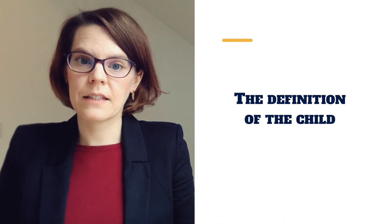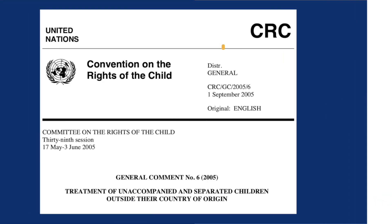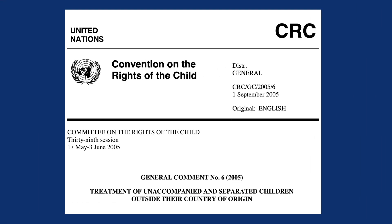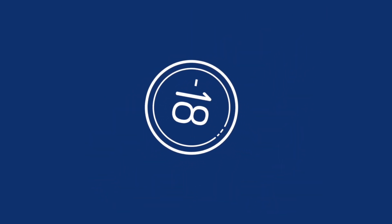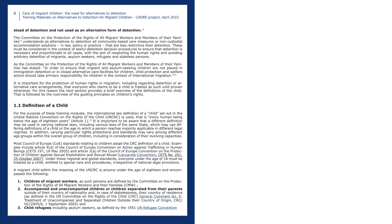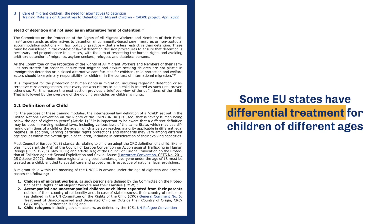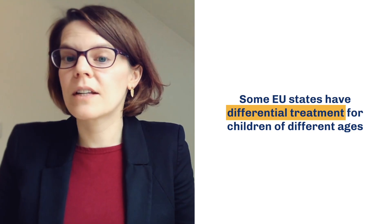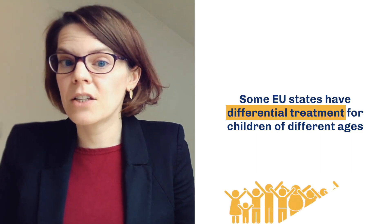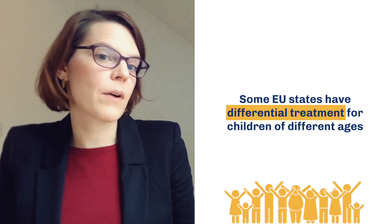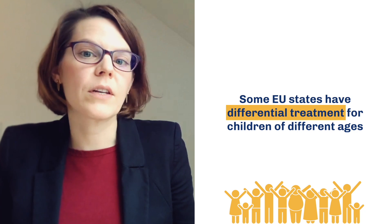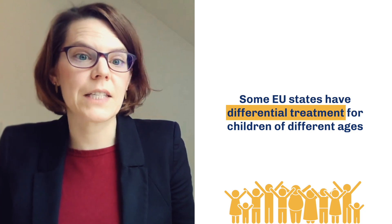First, we look at the definition of the child. The Convention on the Rights of the Child defines a child as any person below the age of 18. However, states and sometimes EU institutions do not always respect this and may suggest differential treatment for children at different ages — for instance, a differentiation for children below and above the age of 12, or below and above the age of 15 or 16.